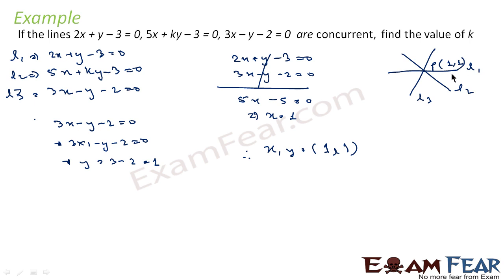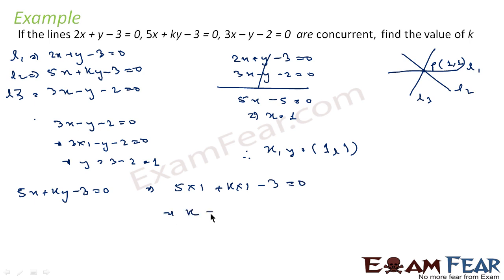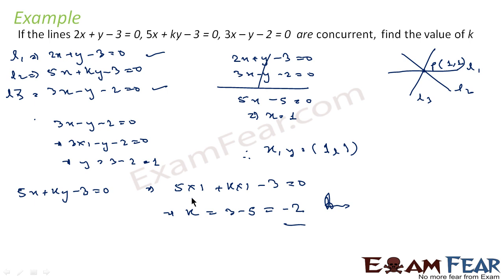We have found the common point (1, 1). Since this is the common point, line L2 will also pass through it. Substituting into L2: 5 times 1 plus K times 1 minus 3 equals 0, which gives K equals 3 minus 5, that is K equals minus 2. So the value of K is minus 2. We solved equations L1 and L3 to find the common point (1, 1), then substituted into L2 to get K.